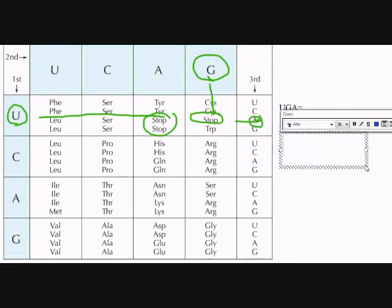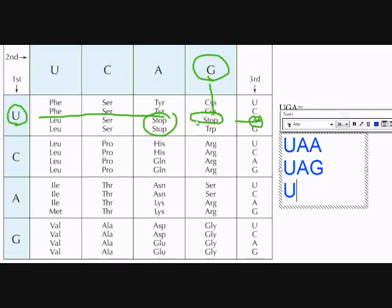So if we look right here at this stop here, this would be UAA. So let's write that down. UAA. And if we look over here at this one, this one would be UAG. UAG. And the last one here that we already found was UGA. UGA. Fantastic. So we have 64 possibilities, 20 amino acids. And in addition, we have three different stop codons here.